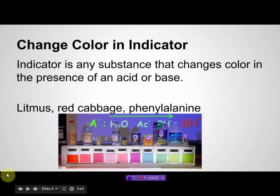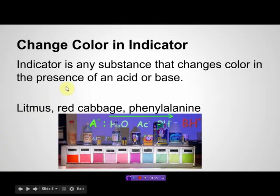Color changes. An indicator is any substance that changes color in the presence of an acid or a base. Examples include litmus paper, red cabbage, phenolphthalein, and bromothymol blue. There are all kinds of chemical indicators that tell us whether something is acidic or basic. One we are going to look at in class is red cabbage, which gives us a nice scale of color. It typically turns pink to red in an acid and blue to green in a base, and starts as a reddish-purple to bluish-purple.